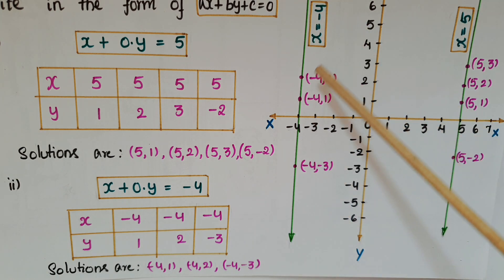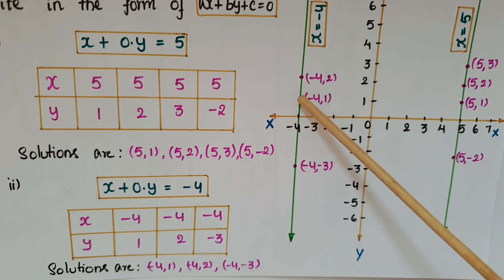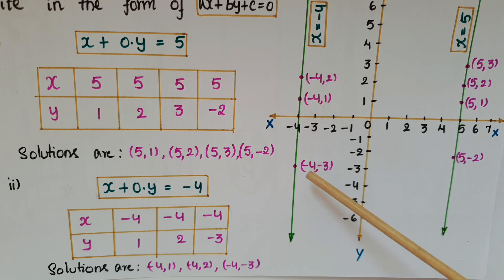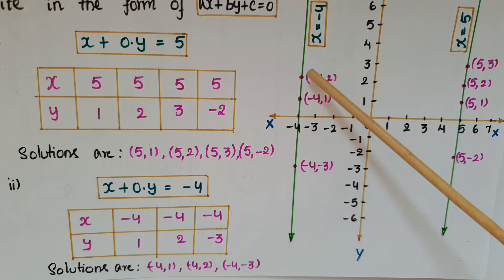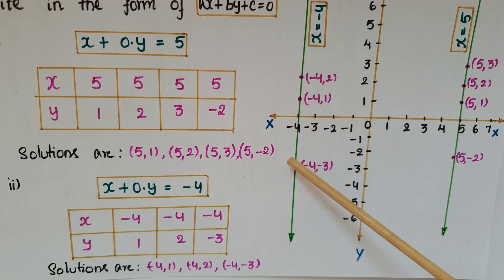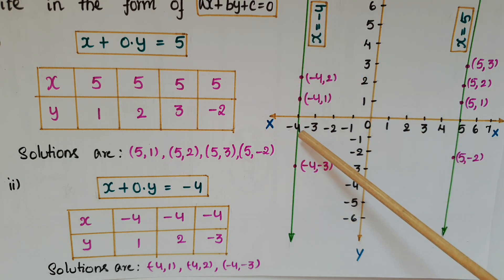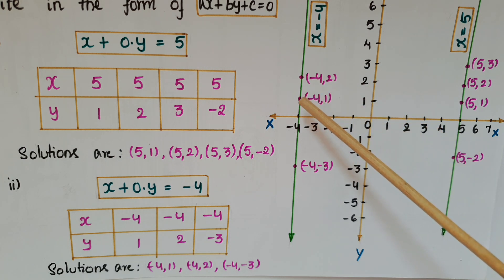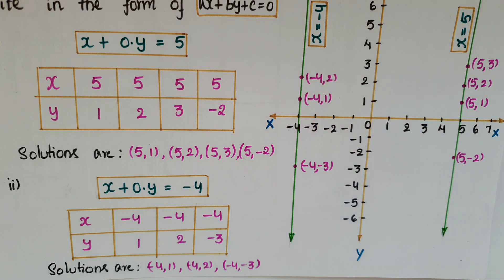Mark these points on the graph: (-4,1), (-4,2), and (-4,-3). Join these points and you get a line — this is x = -4. This line is parallel to the y-axis at a distance of 4 units to the left of the y-axis.